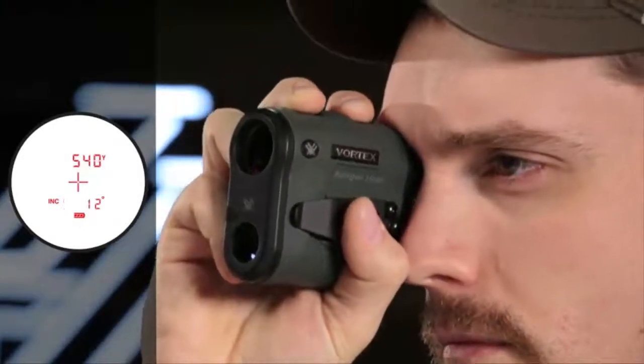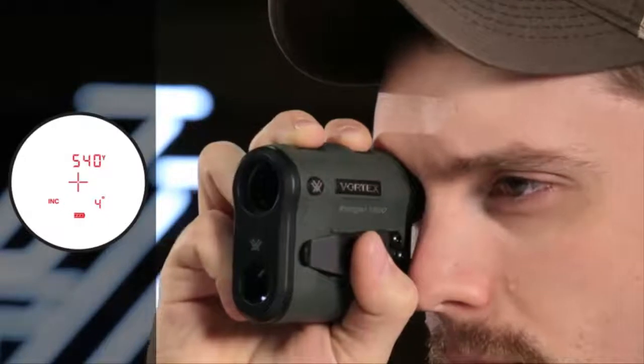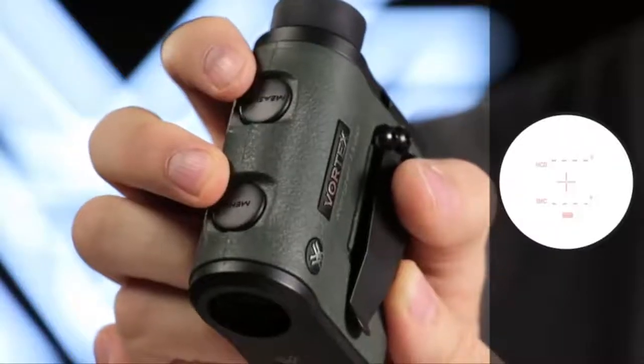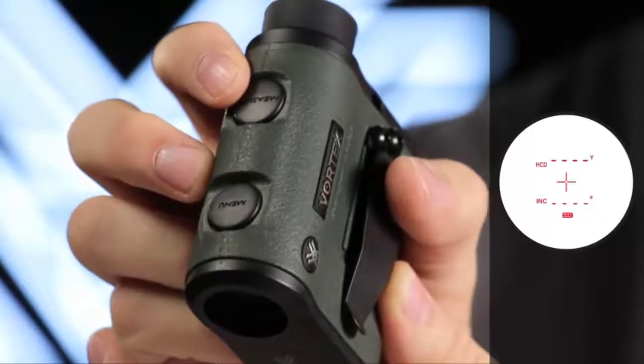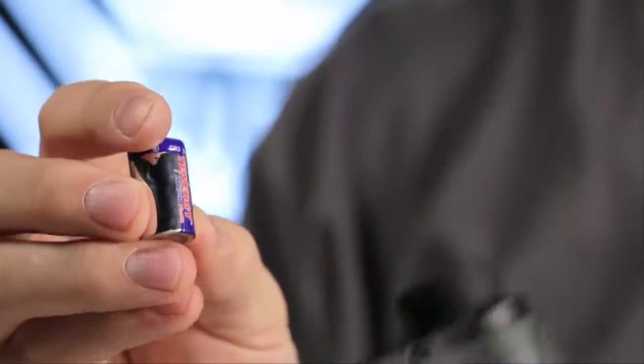A scan feature gives continuous range readings as you pan across a landscape or track a moving target. Three brightness settings allow the display to stay visible in various light conditions. Fully multi-coated lenses deliver optimal light transmission.